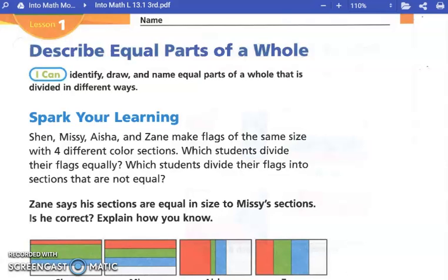Today we're starting with Module 13, which is our module on fractions. Describe equal parts of a whole. So we're going to talk about what equal means. Equal means same, or congruent. In math we use that one. I can identify, draw, and name equal parts of a whole that is divided in different ways.